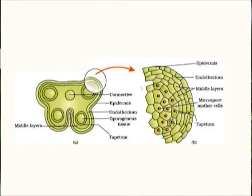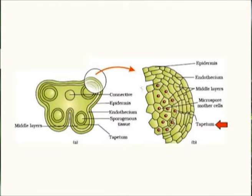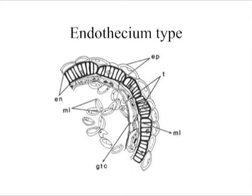On the other hand, the parietal cells divide to form layers of cells at the periphery of the anther, comprising an epidermis, followed by an endothecium, two to three middle layers, and the innermost tapetum. The endothecium consists of radially elongated cells which possess fibrous bands; these are hygroscopic, that is moisture-absorbing in nature.